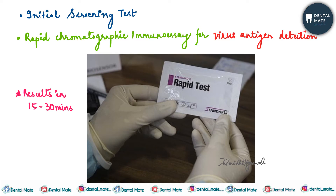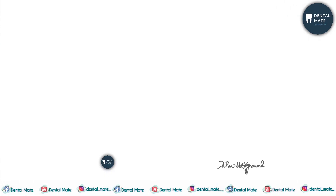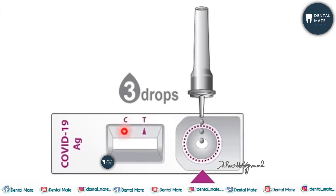We need to add three drops of the sample, which could be a nasopharyngeal swab or the oropharyngeal swab. Three drops of sample are to be added into the well, and we observe the control line which is C, and the test line which is T.